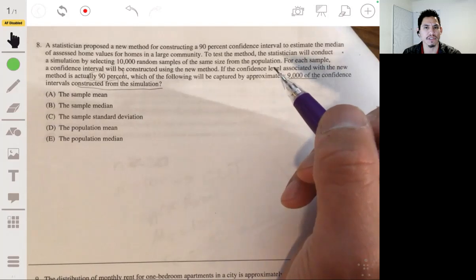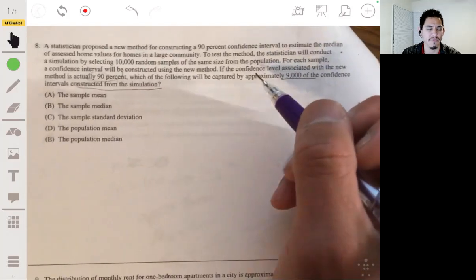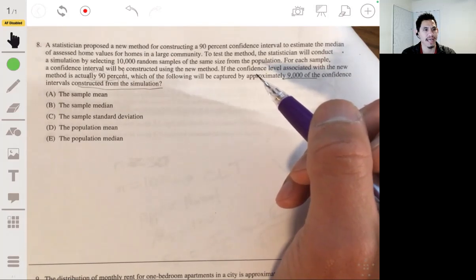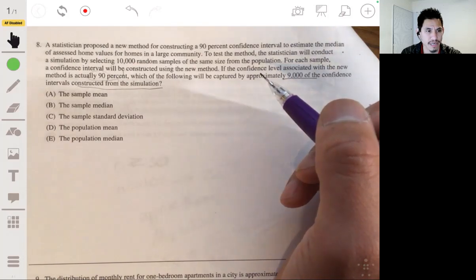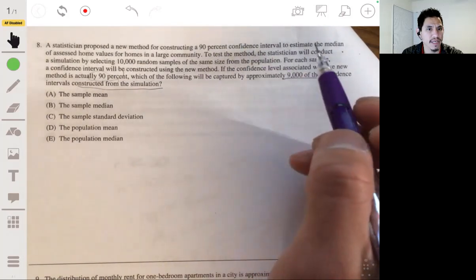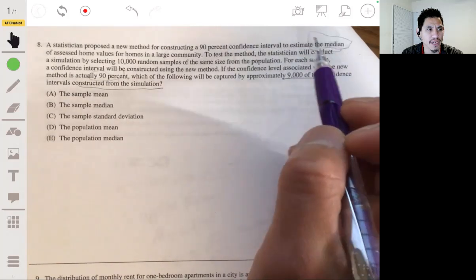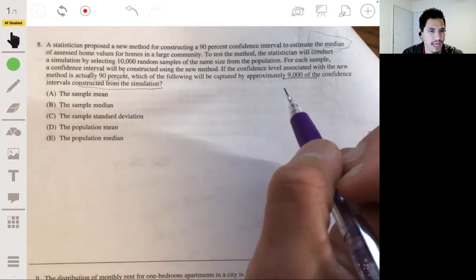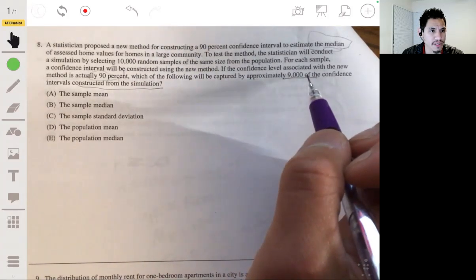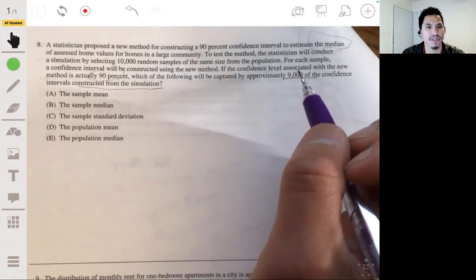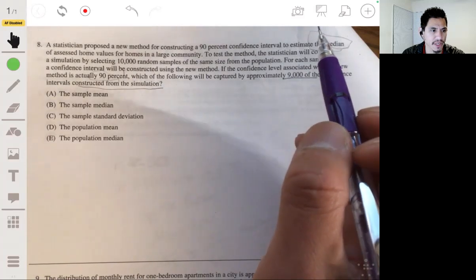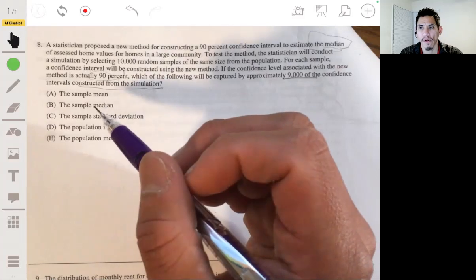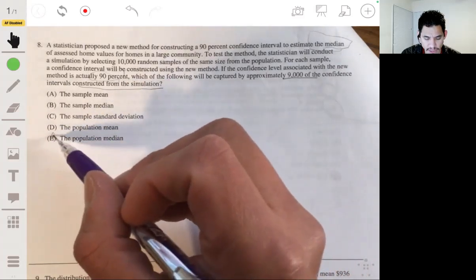Okay, so let's recognize and remember that the confidence level tells you the capture rate. So we have 90% capture rate of the true population parameter. What we're trying to estimate is the median, the median of the population of home values. So we'll capture about 9,000 or 9,000 of the intervals will then capture the true population median. So then the answer will be E, the population median, because that's what we're trying to estimate.